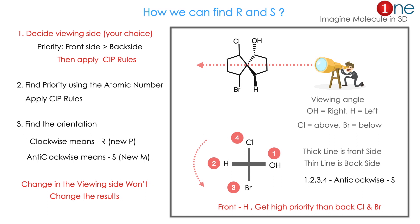That one you have to find using CIP rules. Here, you look at the interesting thing - hydrogen even has higher priority than backside chlorine and bromine. If you find the orientation, it will be anticlockwise. It is S.